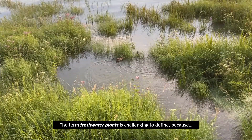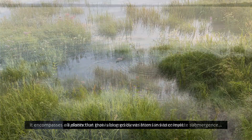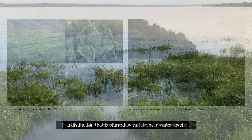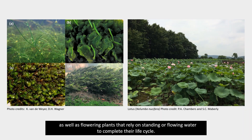The term freshwater plants is challenging to define because it encompasses all plants that grow along gradients from land to complete submergence, a distinction that is blurred by variations in water level. Freshwater plants include green macroalgae, carophytes, hornwort, liverworts, mosses, lycopods, and ferns, as well as flowering plants that rely on standing or flowing water to complete their life cycle.